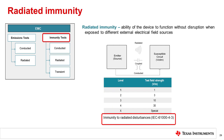Radiated immunity simulates the ability of a device to function without disruption when exposed to different external electrical field sources such as from a cell phone or a router. These disturbances are induced in an RF field in the range of 80 MHz to 1 GHz, and are defined by IEC 61000-4-3.